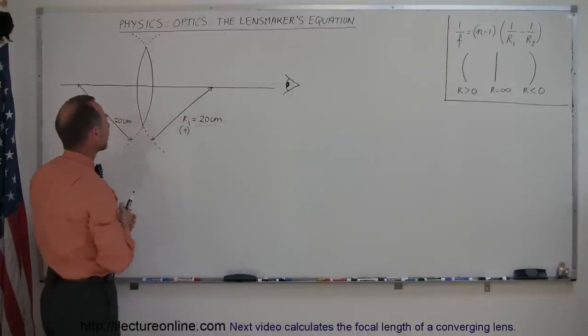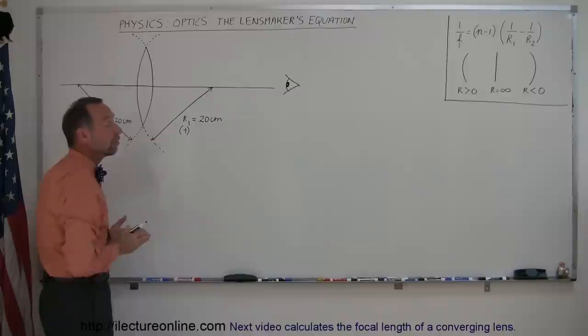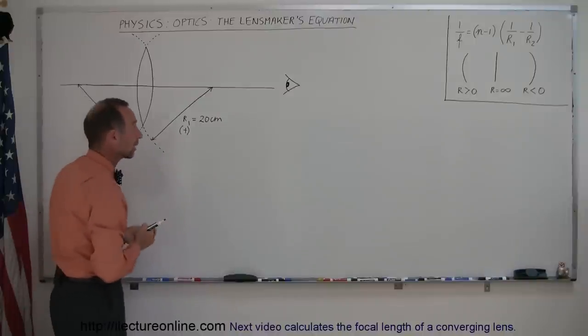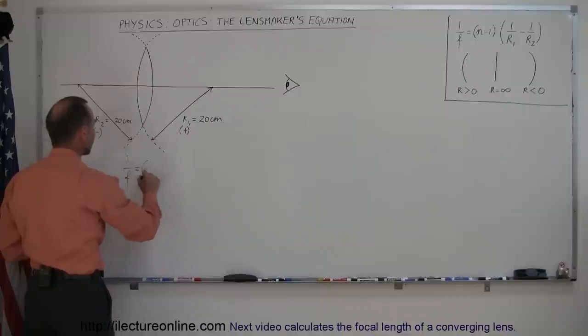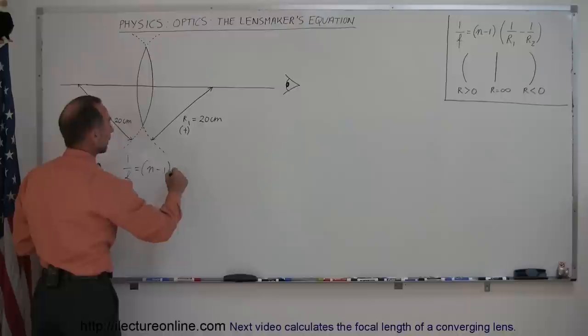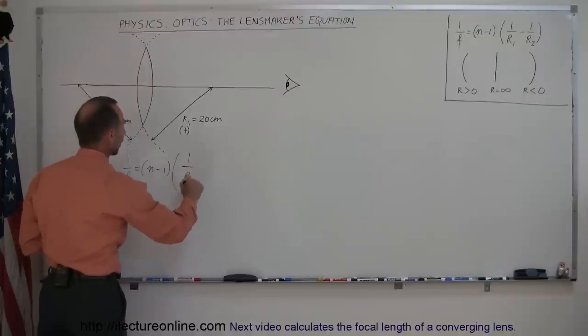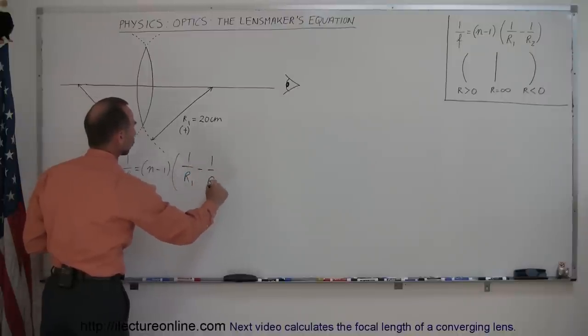Alright, so now the objective is to find the focal length of this particular lens and let's go ahead and try to figure that out. So we use a lens maker's equation, we say that 1 over the focal length is equal to N minus 1 times 1 over R1 minus 1 over R2.